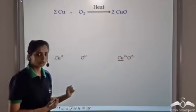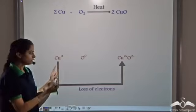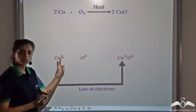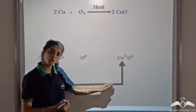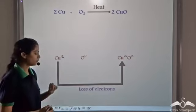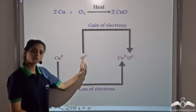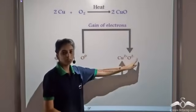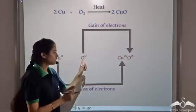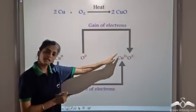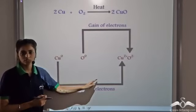So what do we observe? Copper starts from zero — that is, it was neutral — and it is losing electrons, so there is a loss of electrons. And for oxygen, we see it goes from zero, that is from neutral, it becomes minus, gaining two extra electrons. So oxygen is gaining electrons and copper is losing electrons.